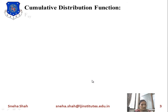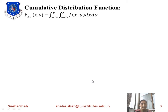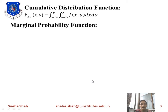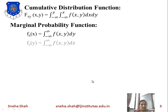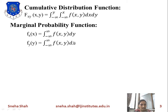The next topic is the cumulative distribution function (CDF). F(x, y) equals the integral from −∞ to y and −∞ to x of f(x, y) dx dy. For the marginal probability function for y: f_Y(y) equals the integral from −∞ to ∞ of f(x, y) dx. For the marginal probability function for x: f_X(x) equals the integral from −∞ to ∞ of f(x, y) dy. To find the marginal for x, integrate with respect to y; for marginal of y, integrate with respect to x.